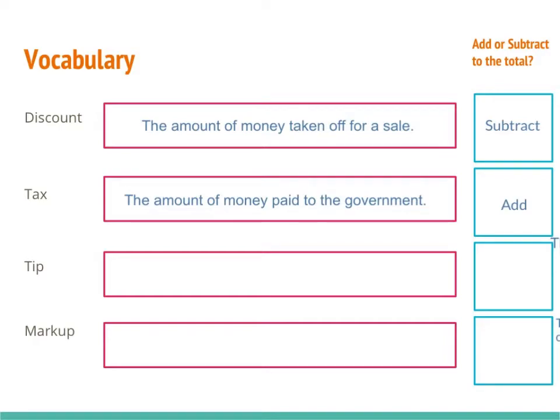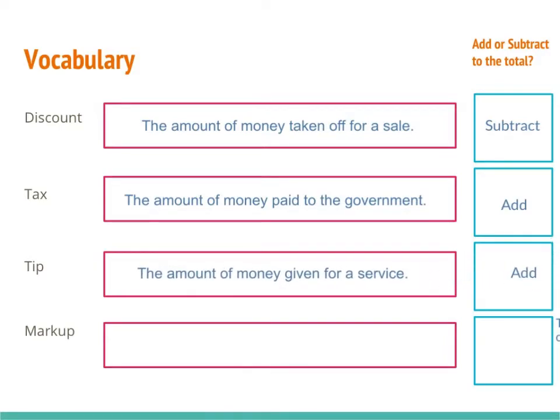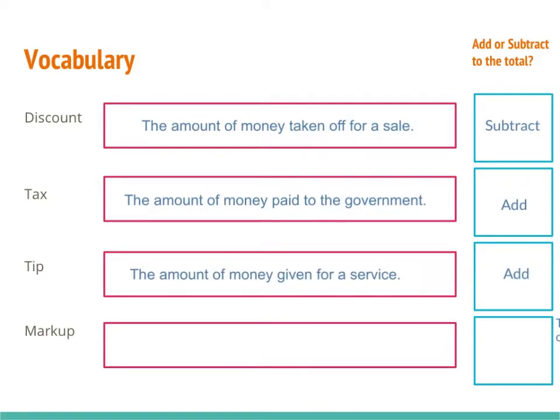We have tip. Tip is the amount of money given for a service. You can buy goods or you can buy services. For example, a haircut is a service — you don't actually walk out of the store with anything in your hand, but you did pay for something to happen. That is a service, and we generally add that to the bill.